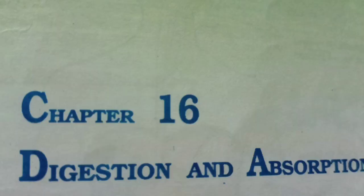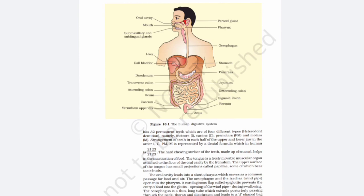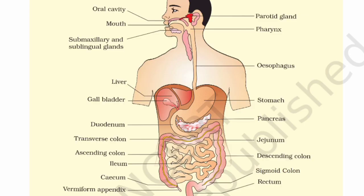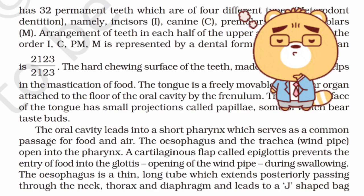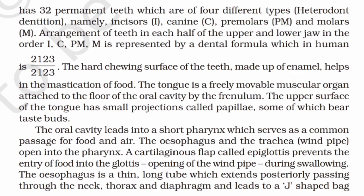Let's take the chapter 'Digestion and Absorption' as an example. When you look at the page, look at the diagrams first — read all the points mentioned in the diagram — and then move to the theory part. Read a line and visualize it in your mind.